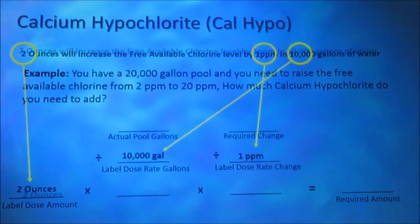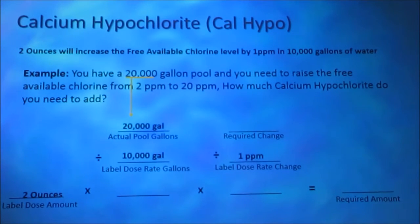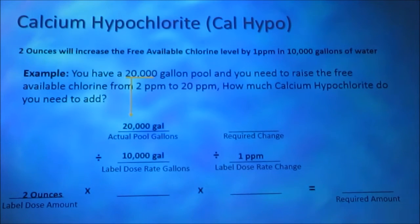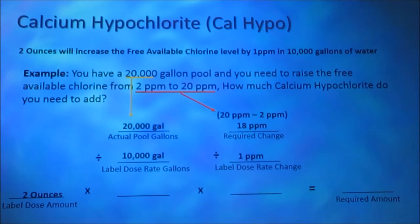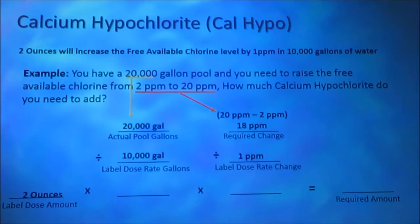Then we add our actual pool volume. Finally we add our required change. We're at 2 parts per million and we want to be at 20 parts per million. 20 minus 2 is 18. We want to increase the chlorine level by 18 parts per million.